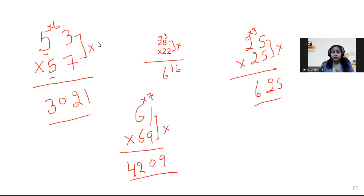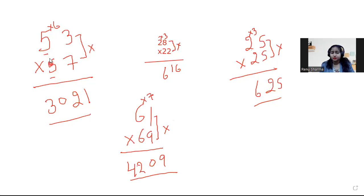And where is this rule applicable? When the first digit is same. So here you can see 5 and 5, both digits are same, and last digit sum is 10. 3 plus 7 is 10. Here 2 and 2 same, right? And 8 plus 2 is 10. 25 times 25, perfect: first digit is going to be same and last digits sum is 10.